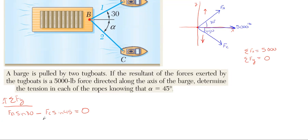Can't really do anything with this equation just yet, so anytime that happens just go to your other summation equation, which is in the x. We'll take everything to the right as positive. With F_A, the component will be to the right.